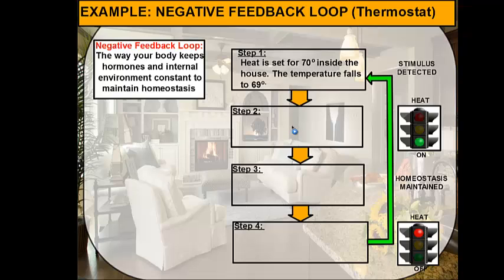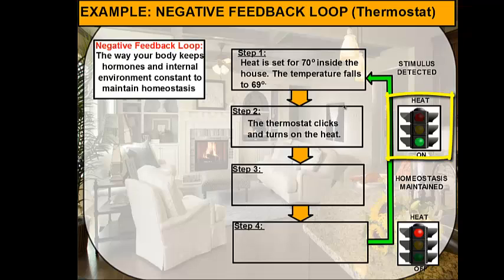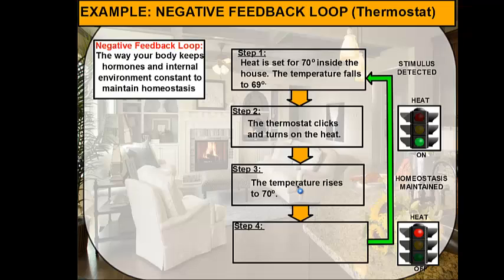As a result, your thermostat is going to click on and turn on the furnace. Then you're going to get hot air coming through the ducts or hot water going through your baseboards and heating up the air. Either way, the room is going to start to heat up because of the heat being dumped into it. So with the addition of all the extra heat that wasn't there before, the temperature is then going to rise to 70 degrees.